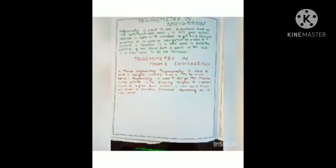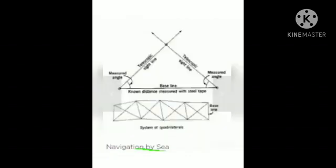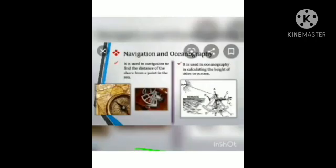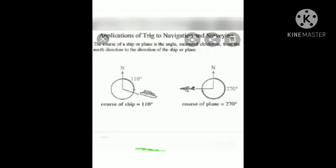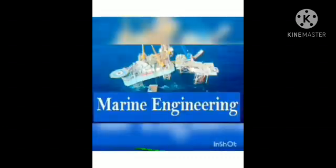Trigonometry can be used to estimate what might have caused a collision in a car accident, how an object fell from somewhere, or at what angle a bullet was shot. Trigonometry in navigation: trigonometry is used to set directions such as north, south, east, and west. It tells you what direction to take with a compass to go straight. It is used to pinpoint a location and to find the distance of a shoreline from a point at sea.